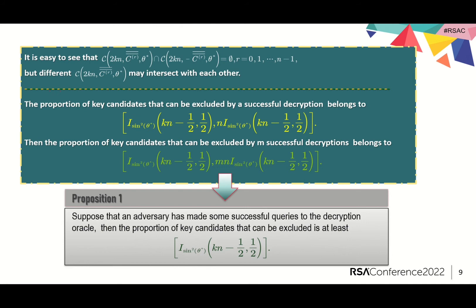Now you can see the importance of characterizing overlaps. If the attacker can limit the ciphertexts he or she uses so that the caps do not intersect with each other, this value can be increased to the current one times m.